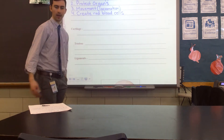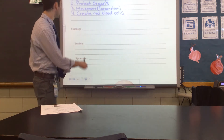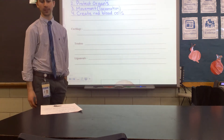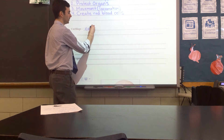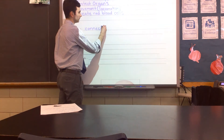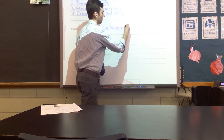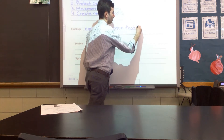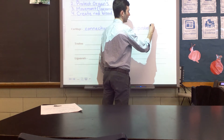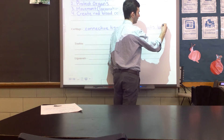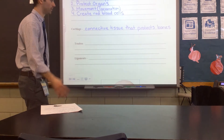There are three types of connective tissue that help bones do what they do. The first type is cartilage. Cartilage is connective tissue that is a little bit softer than bones, and it protects or cushions bones.